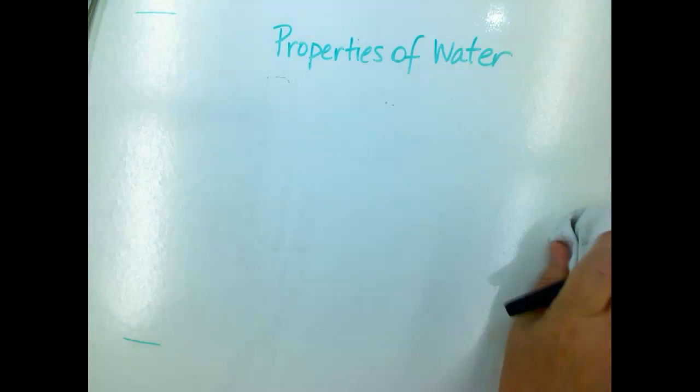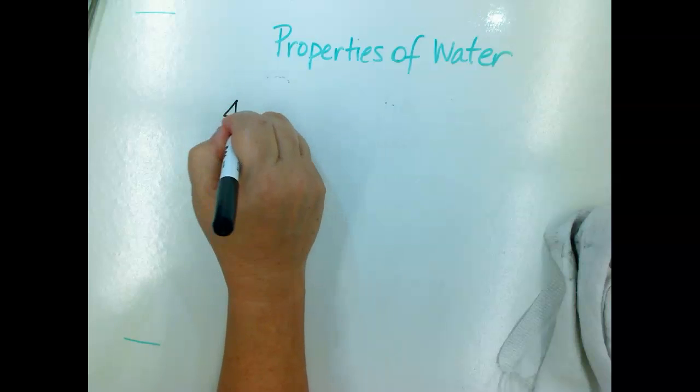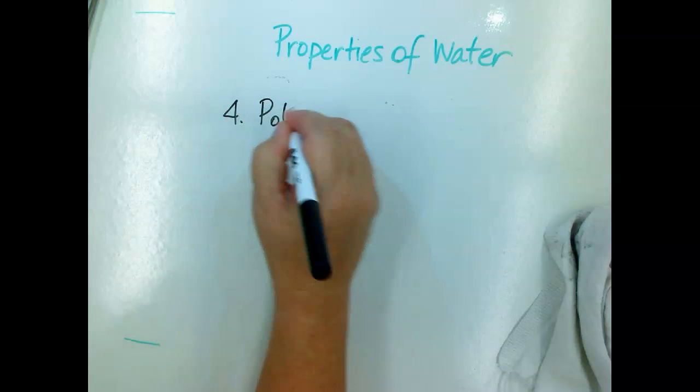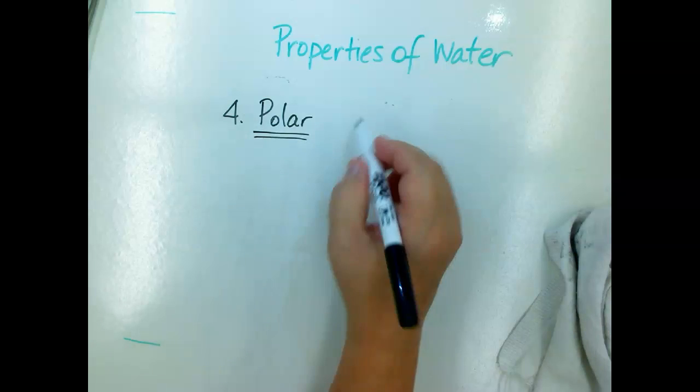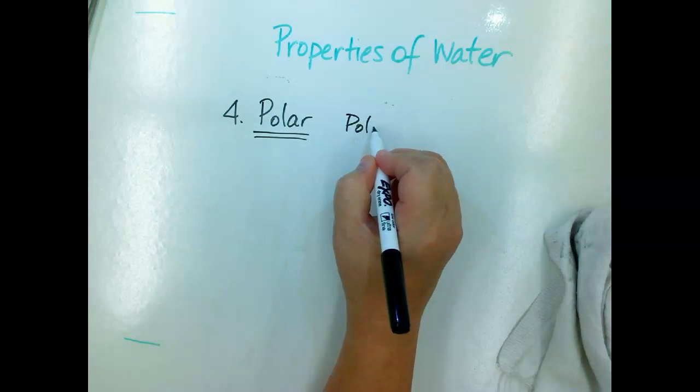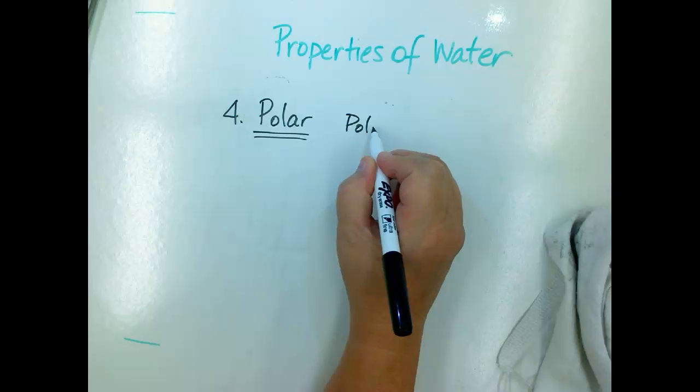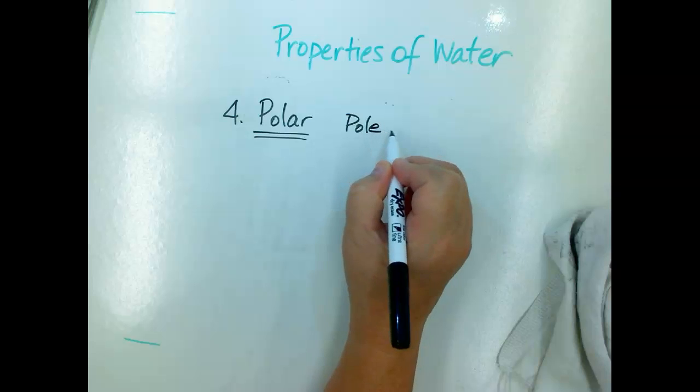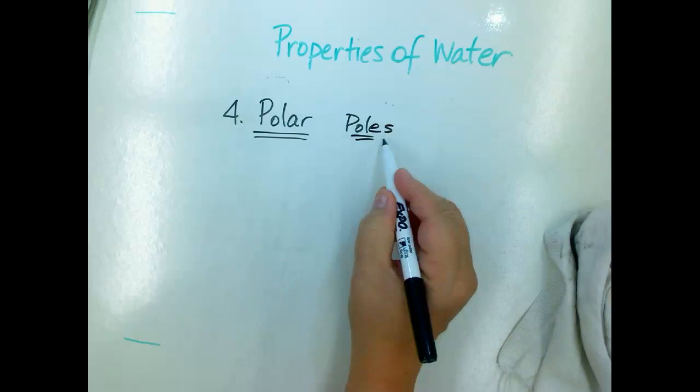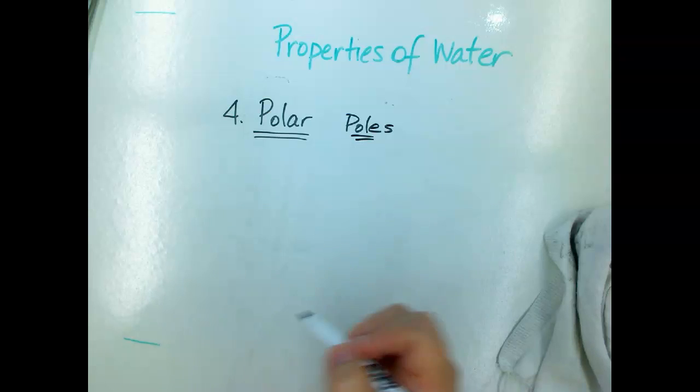The next concept that you have to understand is that water is polar. So it's polar. That means it has poles. And that's what polar means. So polar bears at the North Pole. So it has poles and poles in science are oppositely charged ends.